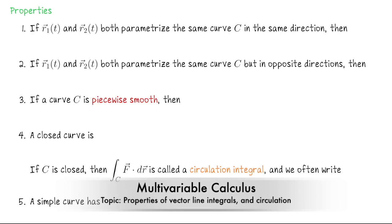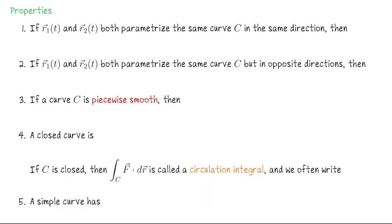Our first property is the same as a property that we saw for scalar line integrals. If you and your roommate both parameterize the same curve C in the same direction using two parameterizations r₁(t) and r₂(t), then you should get the same vector line integral. So if you do the vector line integral with the r₁ description, that will return you the same number that you would get if you use the r₂ description.